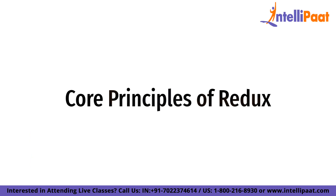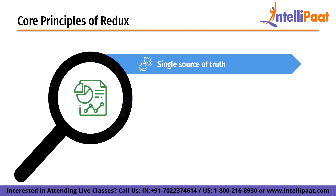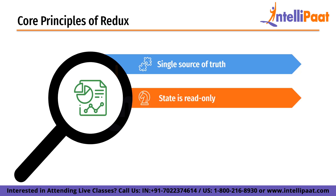Now we'll look at some of the core principles of Redux. Starting with single source of truth: in Redux, the entire state of an application is represented by a single JavaScript object called a store. This store is responsible for managing the entire state of the application and it is the only place where the state is stored. By having a single source of truth, it becomes easier to manage the state of an application and make sure that the different parts of the application are always in sync. Second, state is read-only. In Redux, the state is read-only, which means that it cannot be directly modified by components or other parts of the application. Instead, the only way to change the state is by dispatching an action, which is a plain JavaScript object that describes the change. Once an action is dispatched, it is passed on to reducers which are responsible for updating the state. By making the state read-only and enforcing a strict set of rules for how it can be updated, Redux provides a predictable way to manage application state.